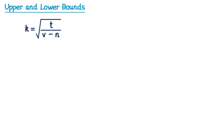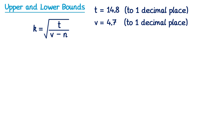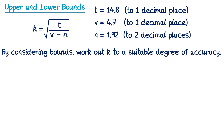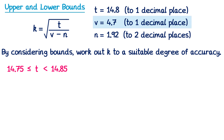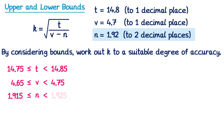Now we'll look at one more algebraic question. We have a formula for k involving a square root, a fraction, and a subtraction, with values for t = 14.8, v = 4.7, and n = 1.92. The wording here may be different — on Edexcel papers it might say 'by considering bounds, work out k to a suitable degree of accuracy.' We start in the same way: error intervals for t are 14.75 to 14.85; for v are 4.65 to 4.75; and for n are 1.915 to 1.925. We have a fraction which is a division, and the denominator involves a subtraction, so we need to be really careful.